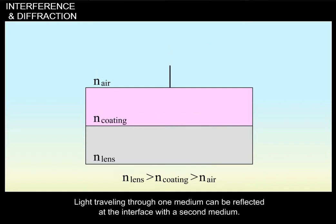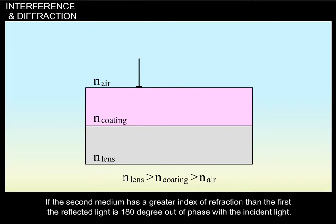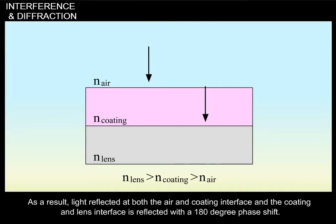Light traveling through one medium can be reflected at the interface with a second medium. If the second medium has a greater index of refraction than the first, the reflected light is 180 degrees out of phase with the incident light. As a result, light reflected at both the air and coating interface and the coating and lens interface is reflected with a 180 degree phase shift.